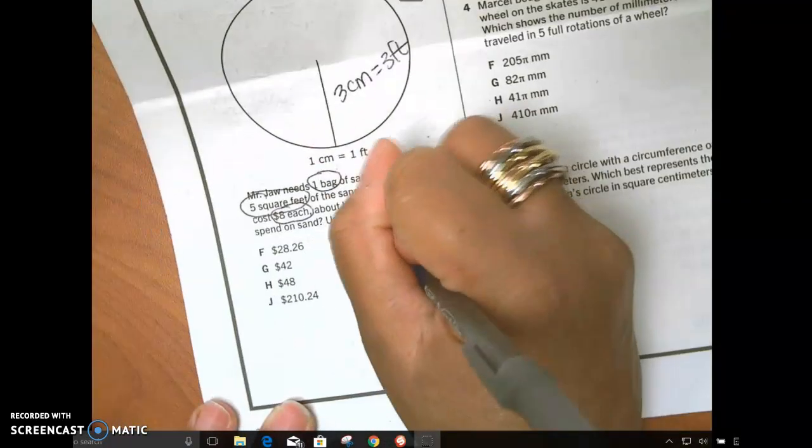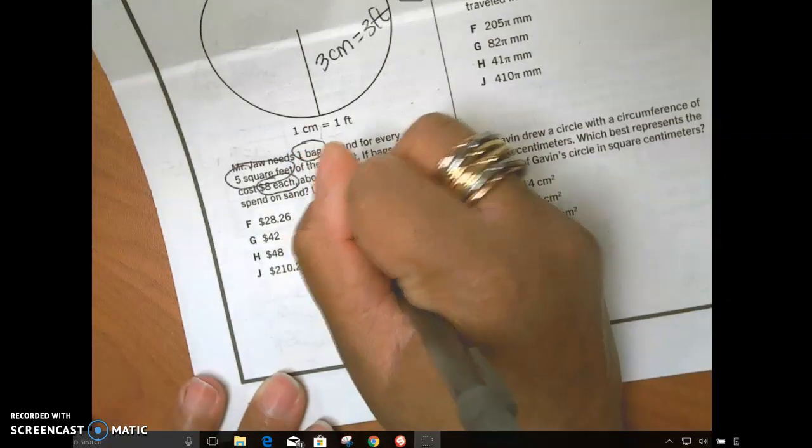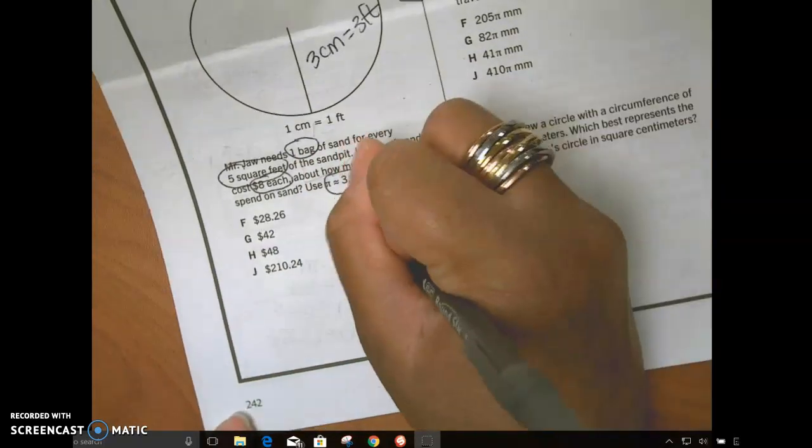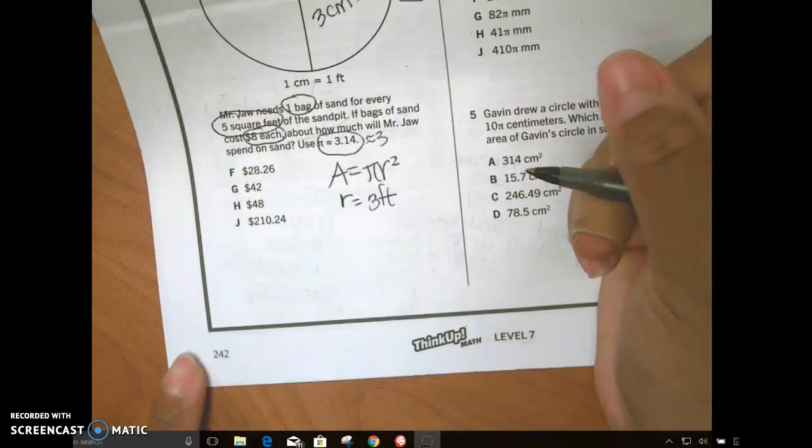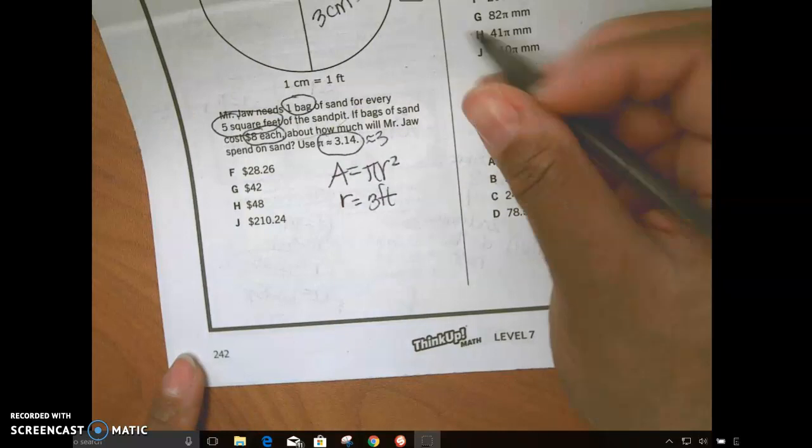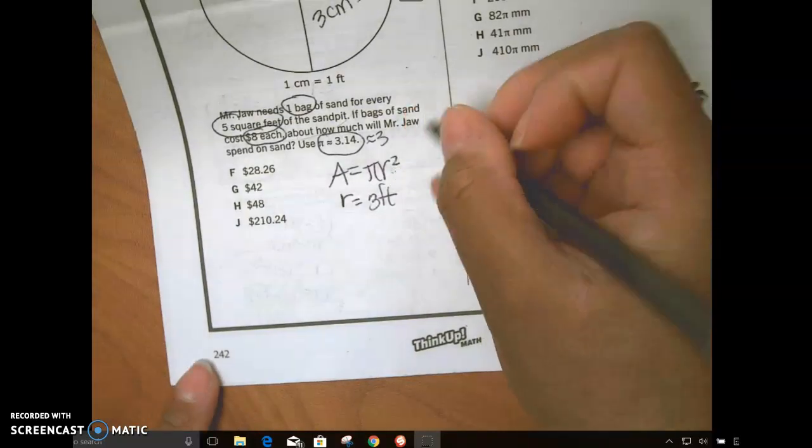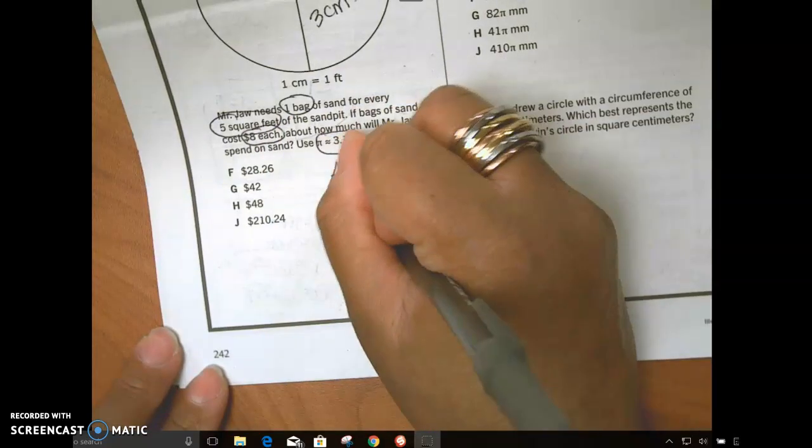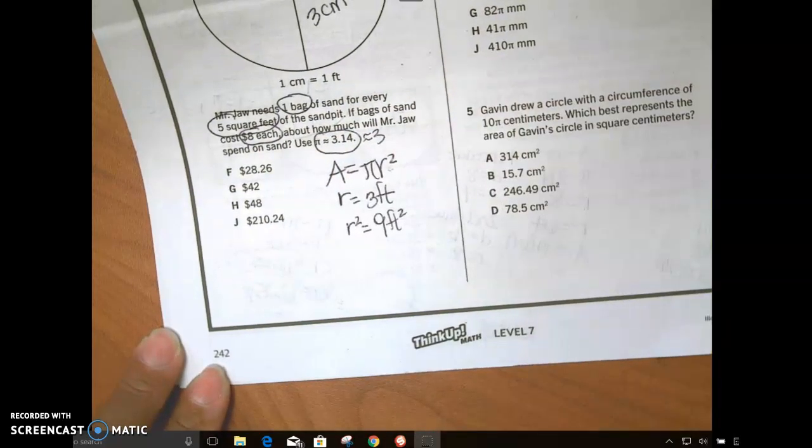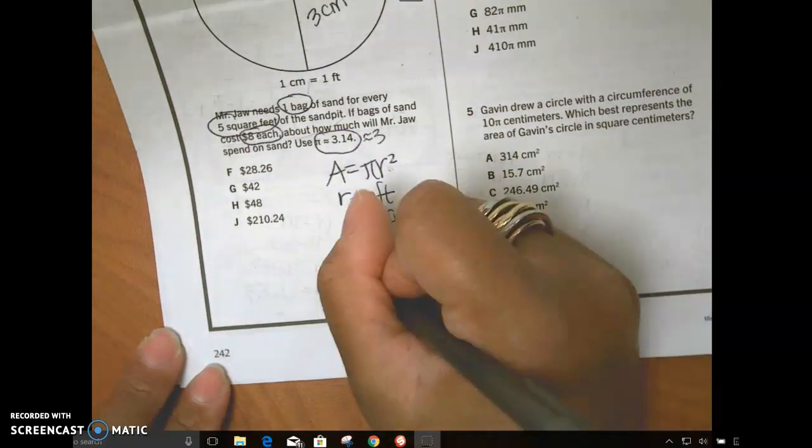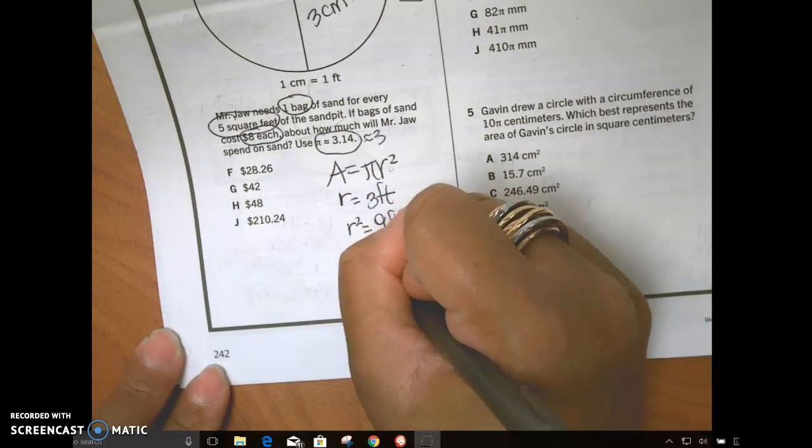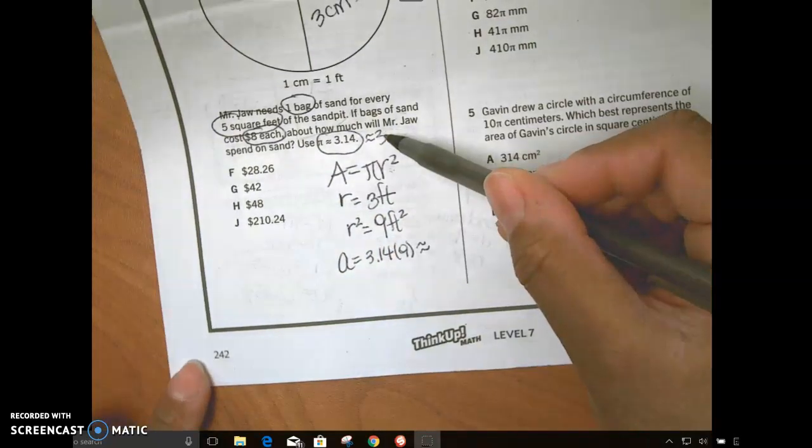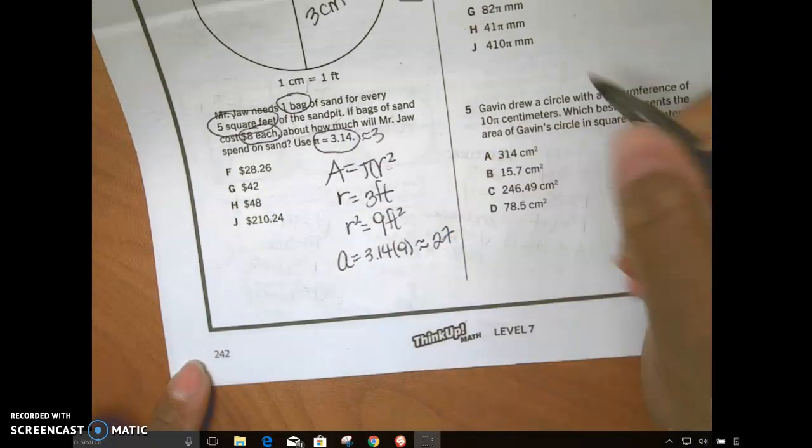Pi times r squared. What's r? Radius. How much though? Three feet. There we go. What else do I need that's not given to me? I don't need a diameter. There's no D written here. Radius squared, which is who times who? Three times three, which is what? Nine feet squared. A equals 3.14 times nine, which is approximately what? About 27. Okay. And then this is square feet.